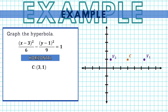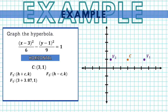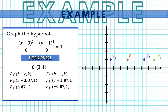Our foci are also along the left and right of the center, at a distance of c. We add and subtract c along the x-coordinate. The first focus is at (3 plus 3.87, 1), which gives (6.87, 1). The second focus is at (3 minus 3.87, 1), giving (negative 0.87, 1), which is in the second quadrant.